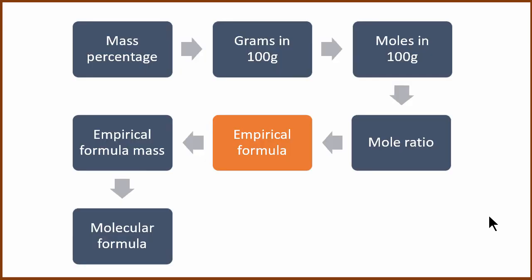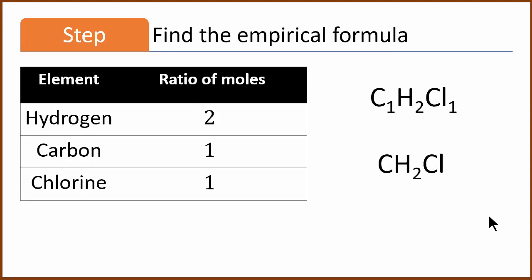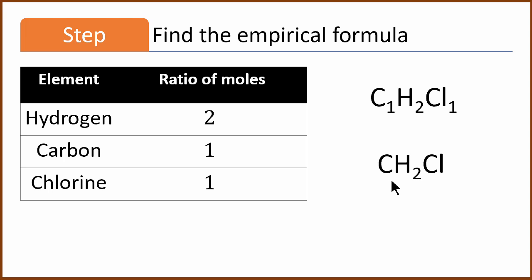Once we found the ratio of the moles, that ratio is actually the empirical formula. In this case, we know hydrogen to carbon to chlorine is 2 to 1 to 1. We could write H2C1Cl1, but usually we write carbon first. So that is why it is CH2Cl — 1 carbon, 2 hydrogen, and 1 chlorine. We don't write the 1. So the actual empirical formula is CH2Cl.